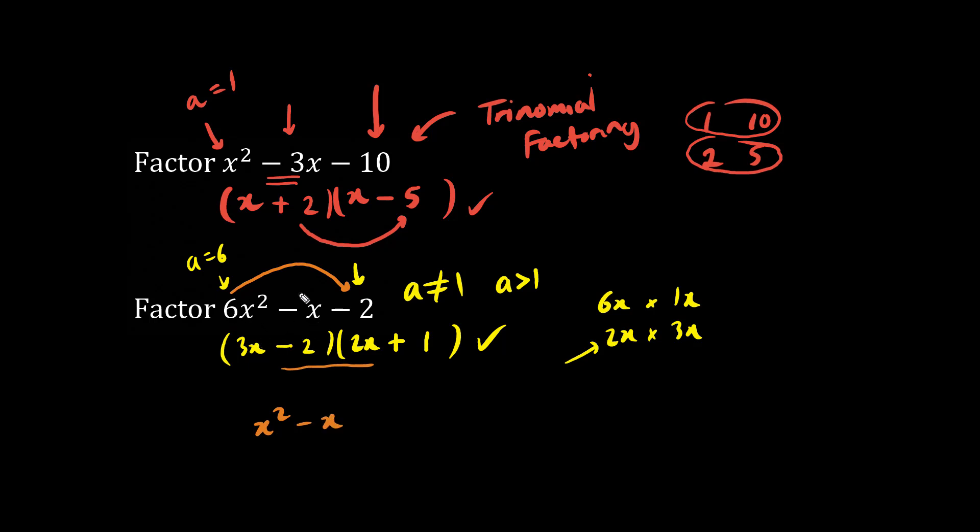What we do is we multiply the a value by the constant and we copy down the question again. x squared minus x, 6 times minus 2 is minus 12. Now do not write equal, this is just a trick.